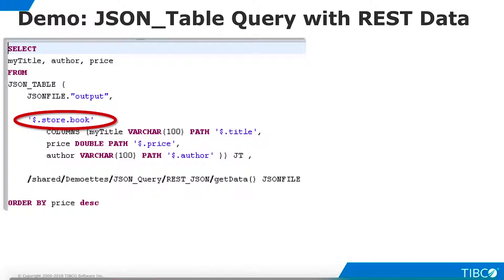The second element is the row provider. This is a path to the row level of the JSON structure. Note the dollar sign at the beginning of the path. JSON paths were designed to be logically compatible with XPath path expressions. However, since a JSON structure is not required to have a root member, JSON assigns the abstract name dollar sign to the outermost level object.